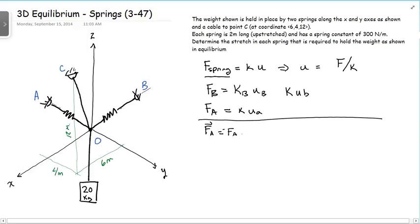So that's negative FA in the J direction. And we can say FB is equal to FB in the negative I direction. So I'll be able to set these equal to what I have up above here.